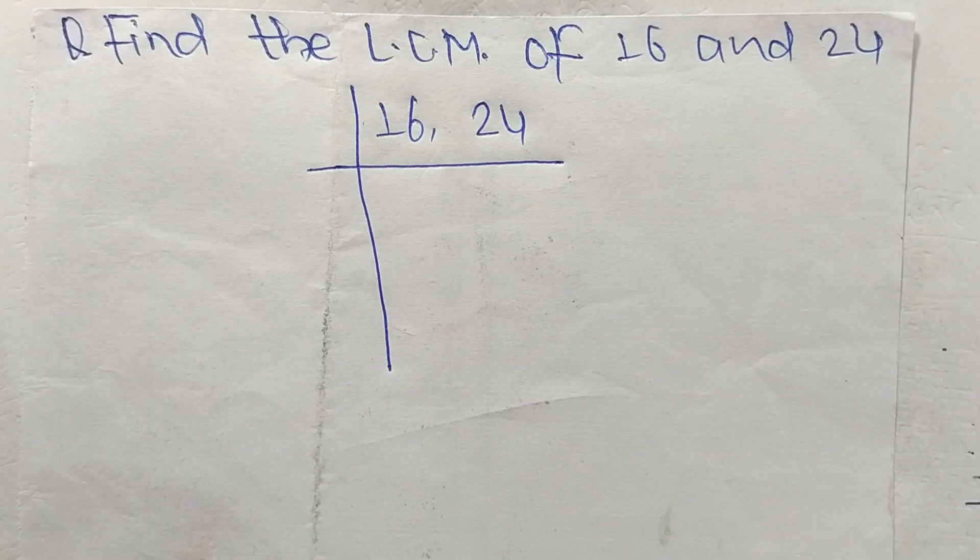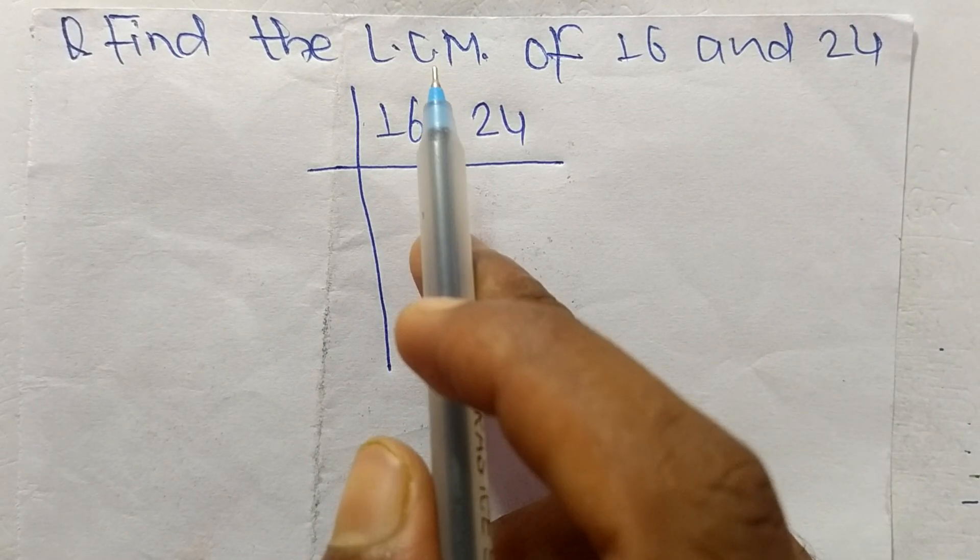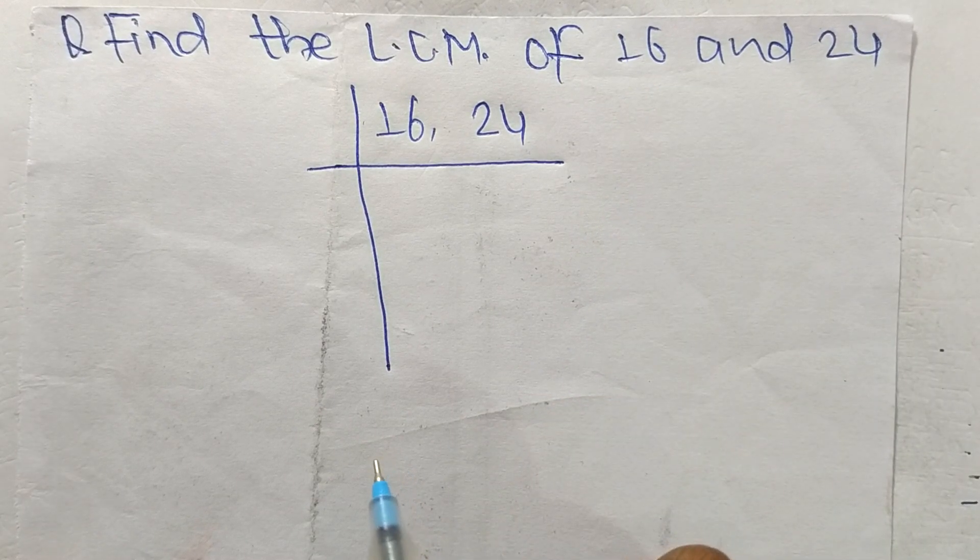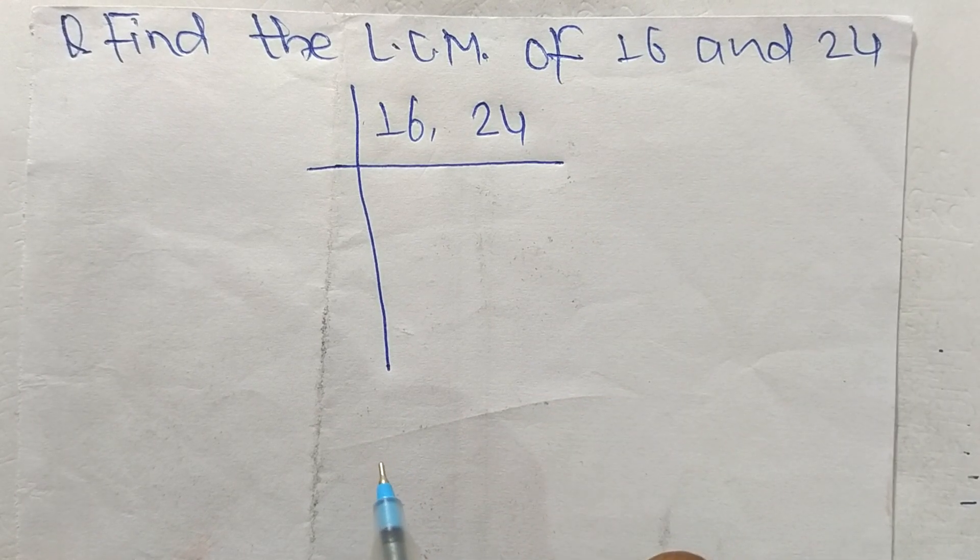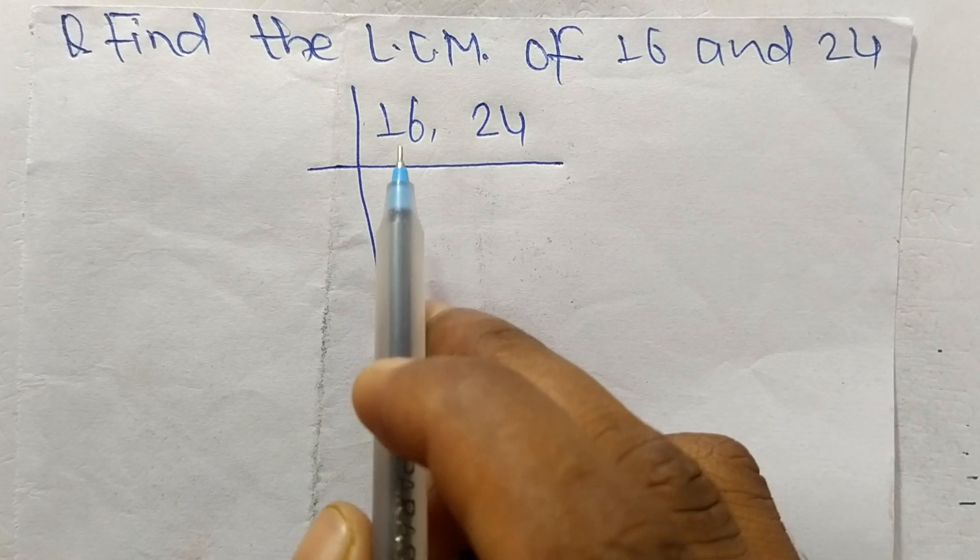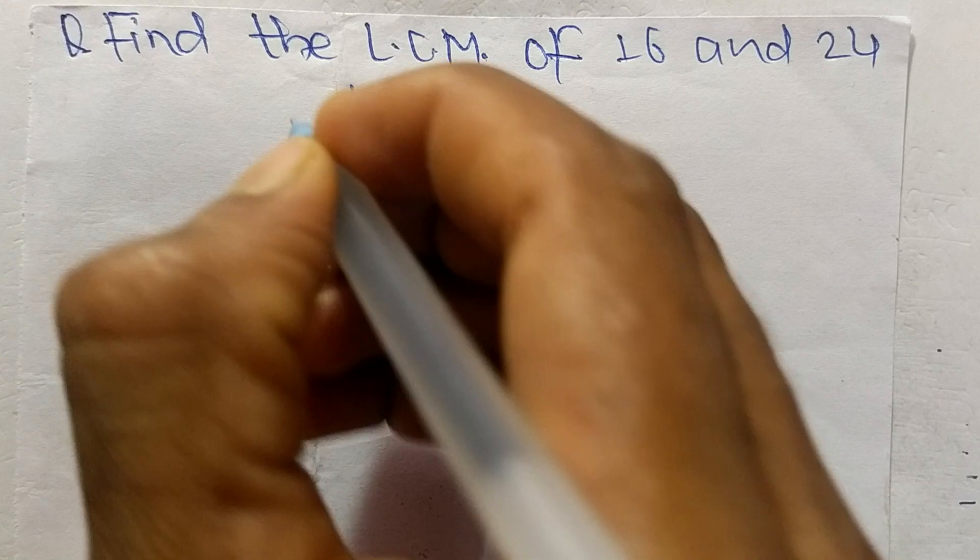Today in this video we shall learn to find the LCM of 16 and 24. To find LCM, first we have to choose the lowest number that can exactly divide 16 and 24. The number is 2.